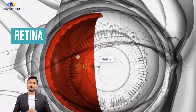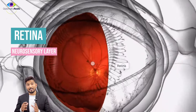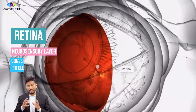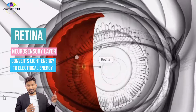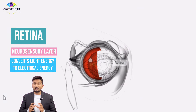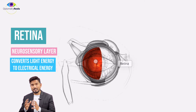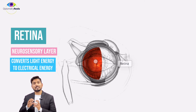The retina is the neurosensory layer of the eye which converts light into electrical energy. It contains various layers and cells, as well as neurons which carry information to the brain.